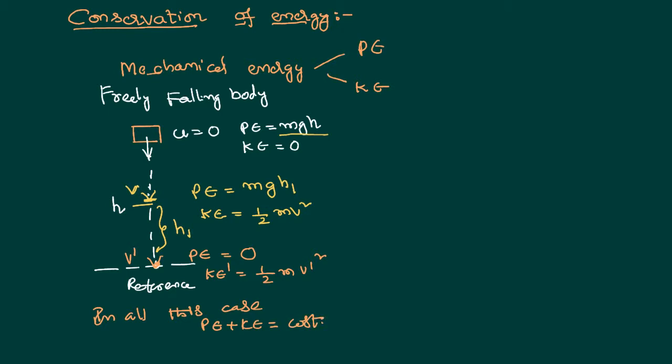Energy is neither created nor destroyed — it just converts from one form to another format. This concept is called the law of conservation of energy. We can have the same discussion not only for a freely falling body, but even for a vertically thrown body.